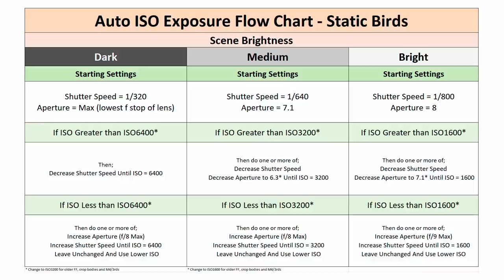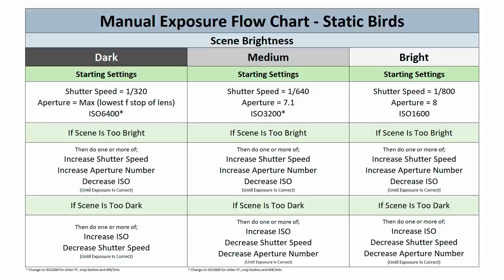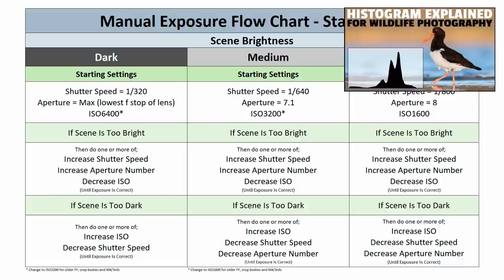This next flowchart is for manual exposure mode. You follow a very similar path — check the brightness of the scene and dial in those recommended settings. The difference is that I use a histogram to tell me the brightness of the scene. I basically change my settings until my histogram is exposed to the right, showing a correct exposure.